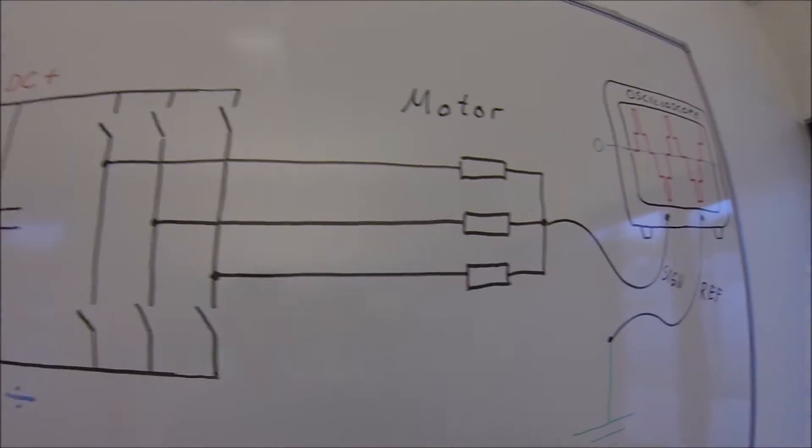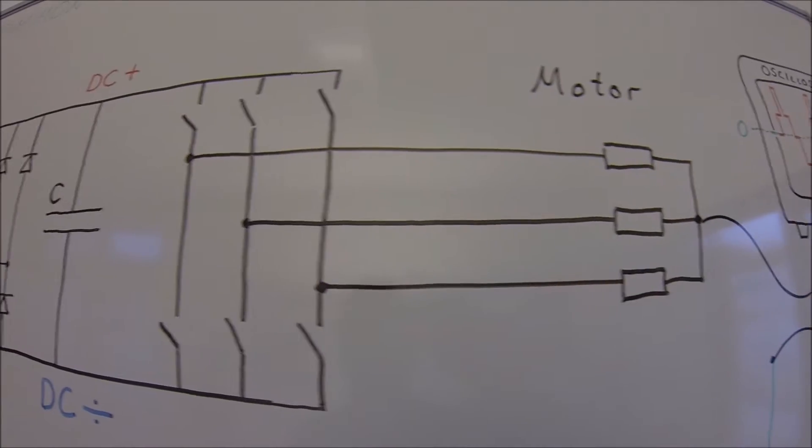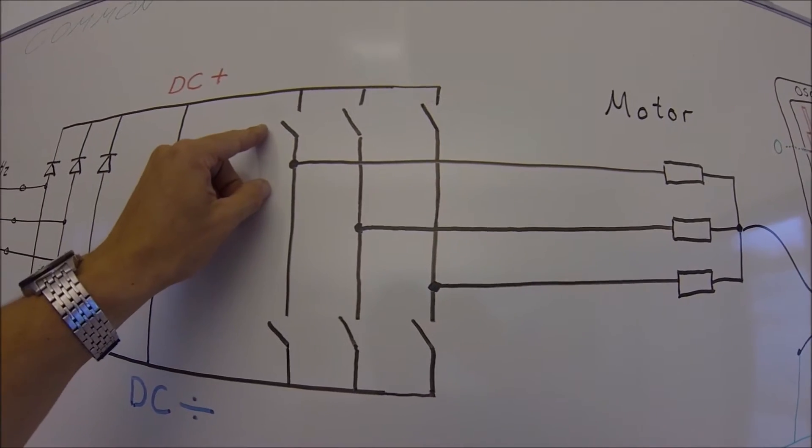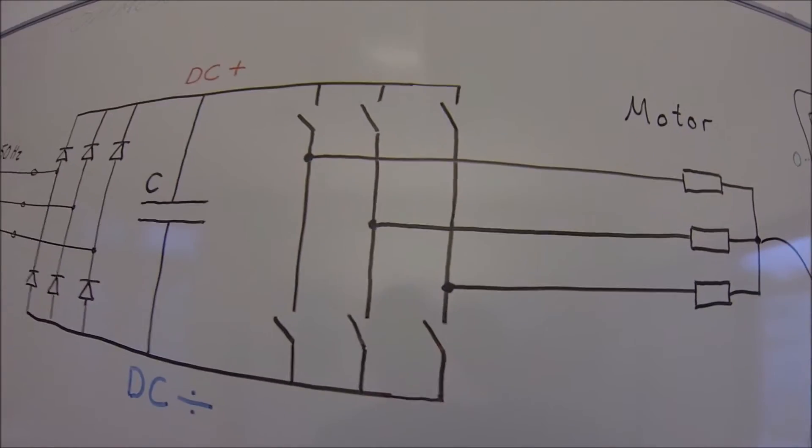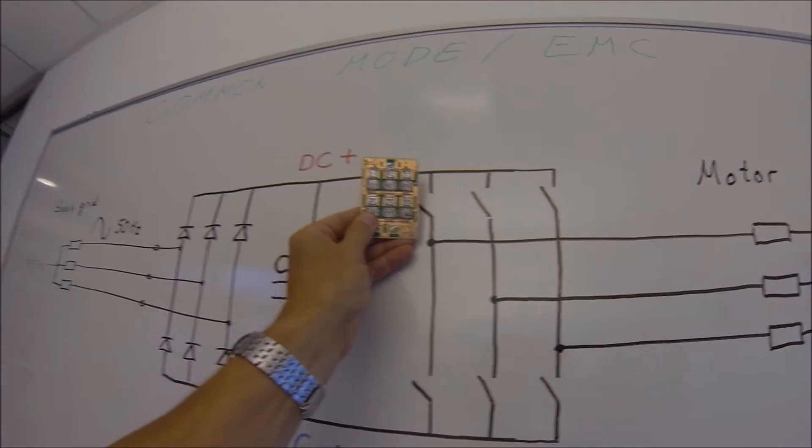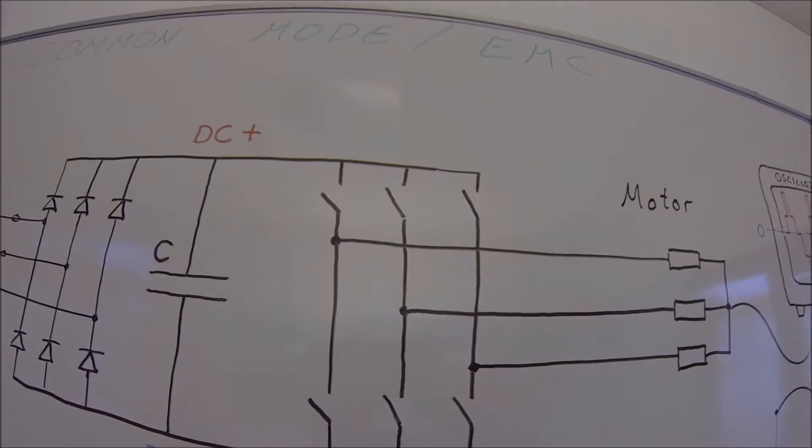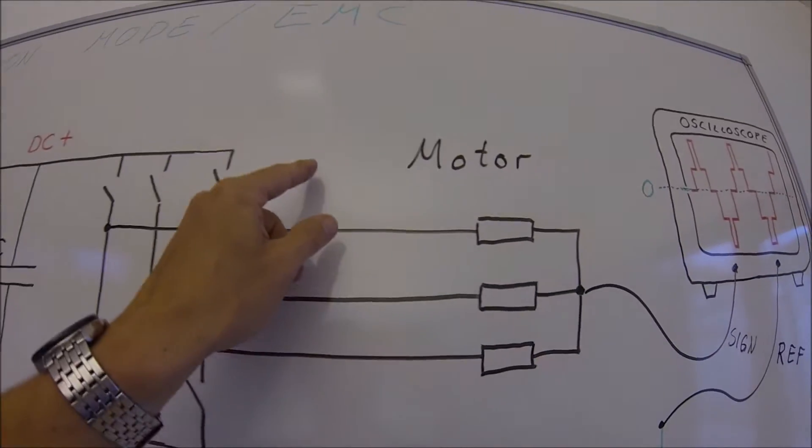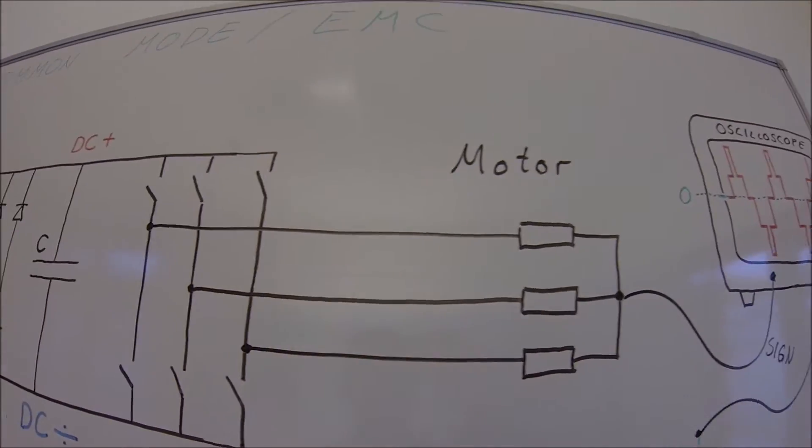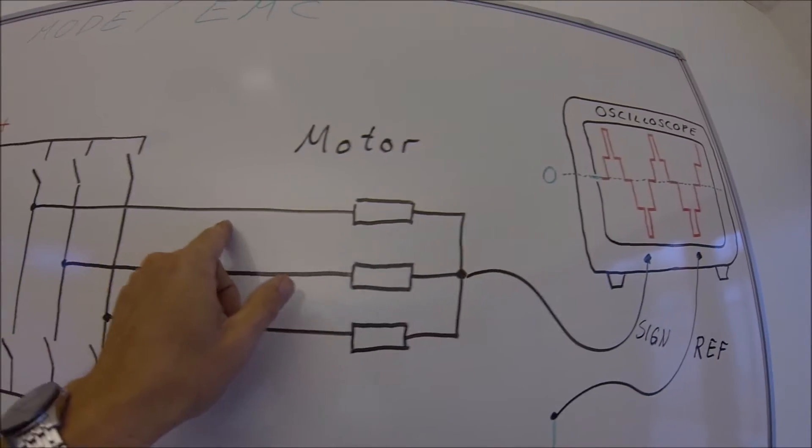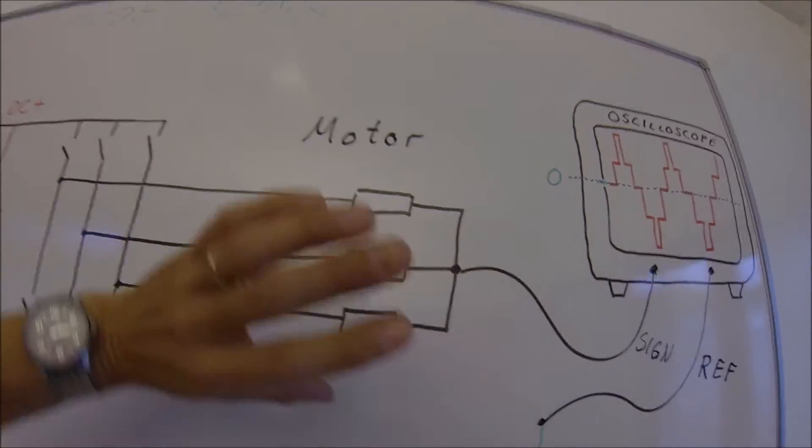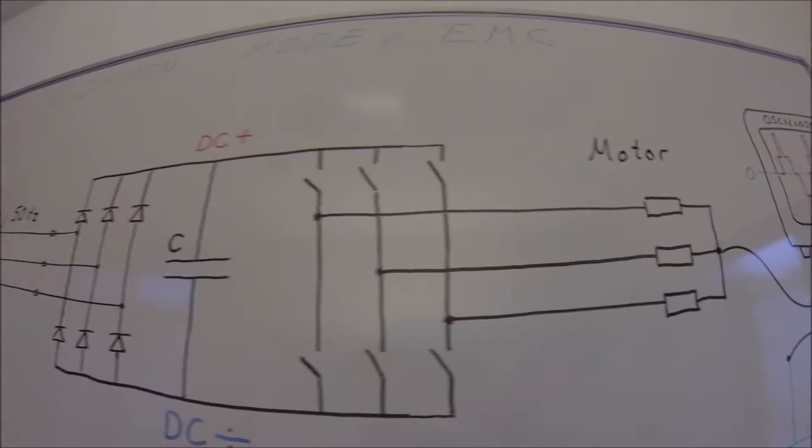Then to produce the AC we have transistors here, IGBTs, big industrial transistors which produce a new AC where we can select the frequency and the frequency we push it through the motor will control the RPM of the motor.